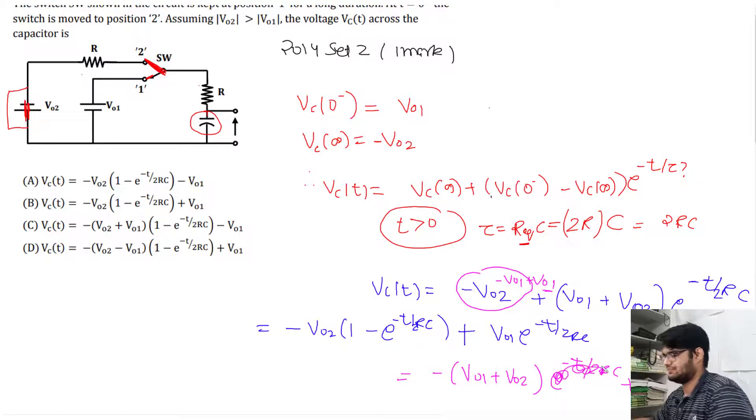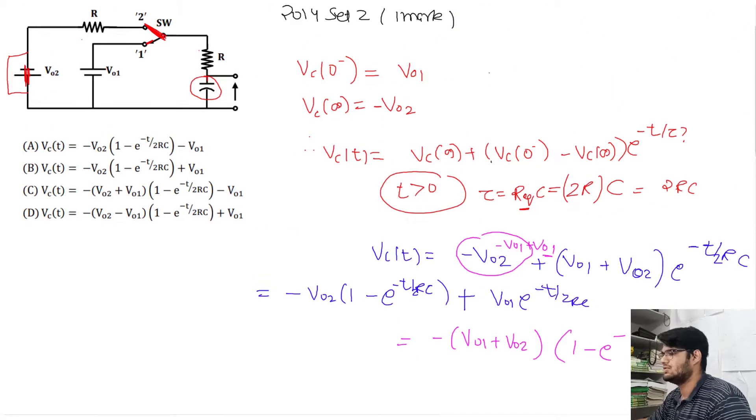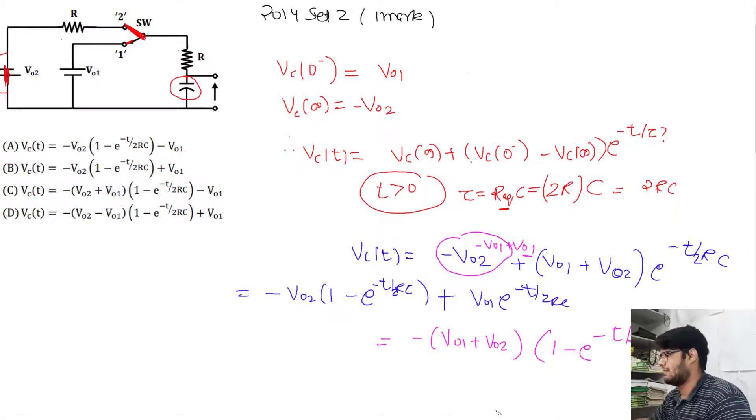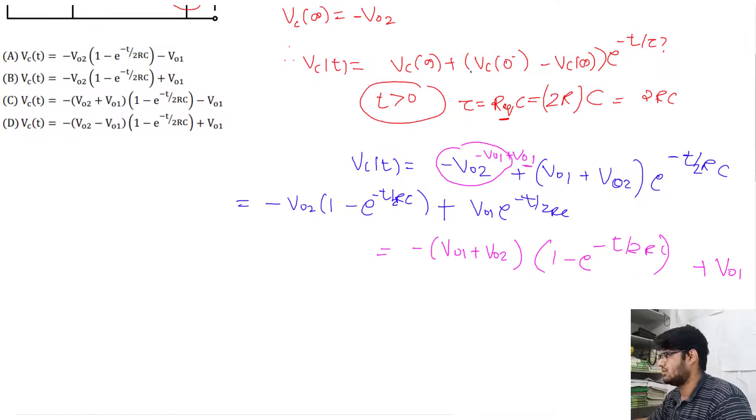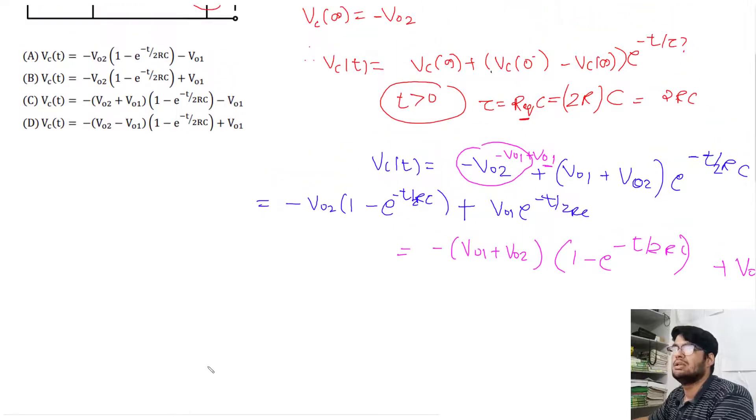So this will give you option C. When you take common, you get (1 minus e to the power minus t by 2RC) plus V01. Are you getting the answer? Is it matching?